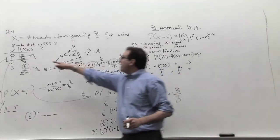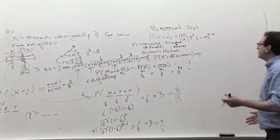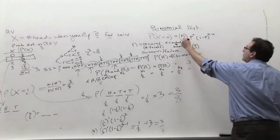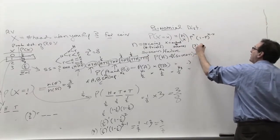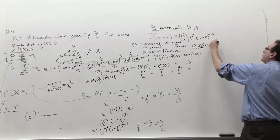What's the chance of getting exactly one head when you're flipping three coins where the chance is 50-50 heads and tails? Well, according to the formula, there'll be three choose one because there are three coins, one is a head. The chance of a head is a half, which is to the one power. The chance of a tail is one minus a half, three minus one power.